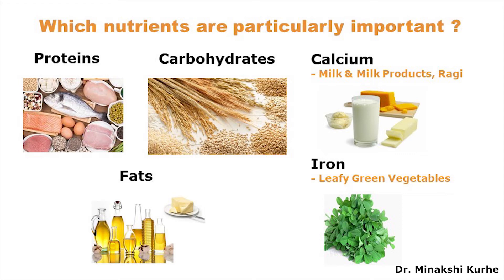Now you know the sources of carbohydrates and proteins. Let us see what the calcium and iron rich foods are. Calcium is found in milk, all milk products like curd, yogurt, cheese, paneer, soya bean, cornflakes and fish. Ragi is one grain which is rich in calcium. Iron sources are dark green leafy vegetables, cornflakes, oranges and in non-vegetarian food like fish and specifically organ meat. Try to develop healthy food habits and eat leafy vegetables in different tasty forms.